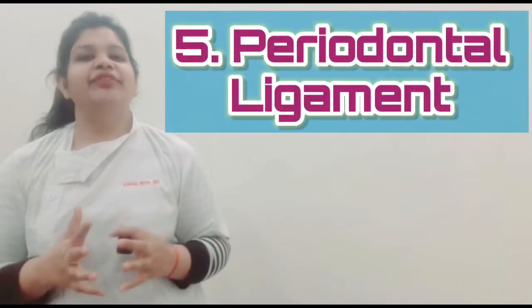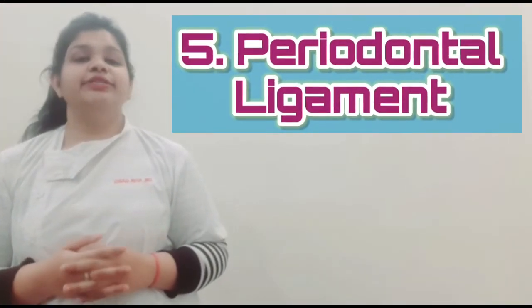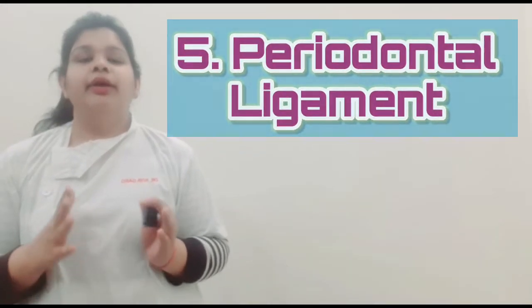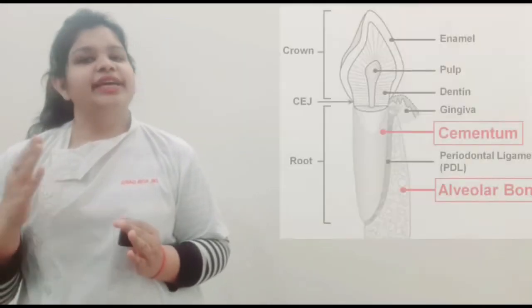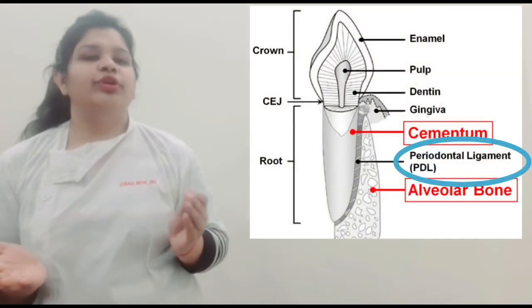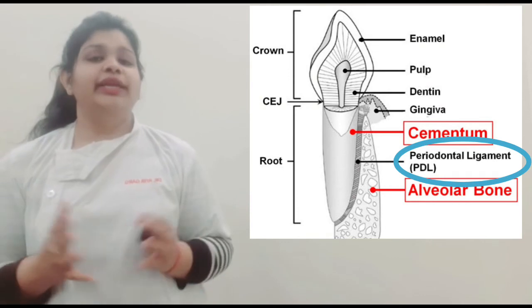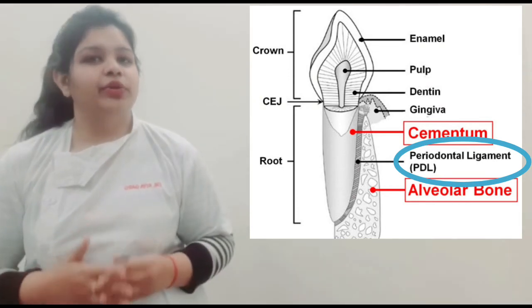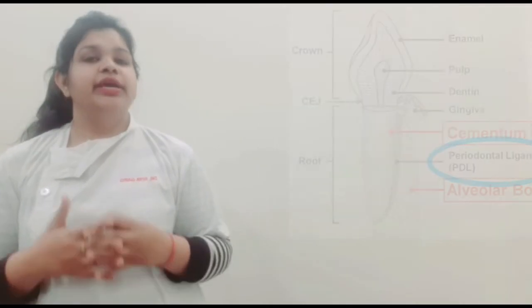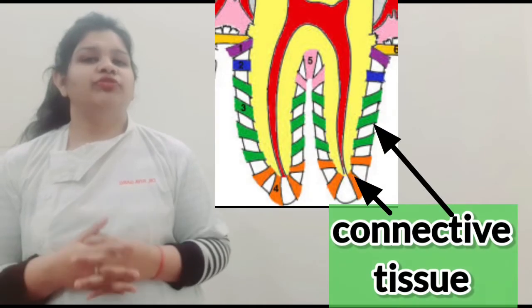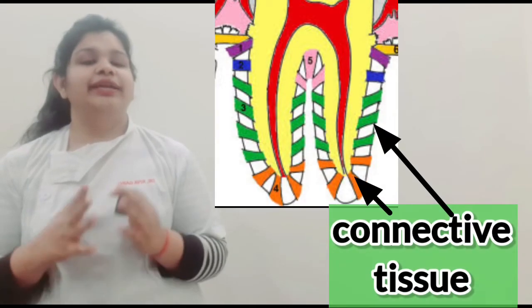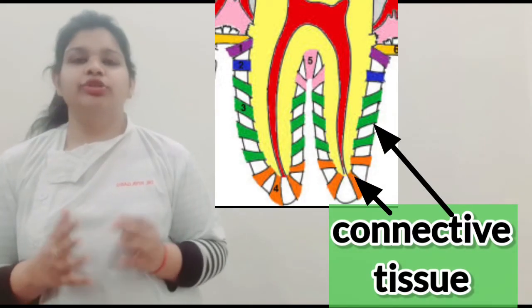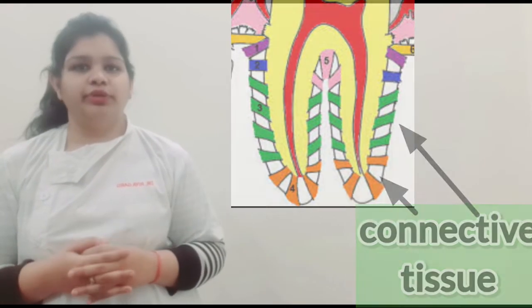The last and final layer is the periodontal ligament. It has cementum on one side and the alveolar bone on the other side. It is a layer between the cementum and alveolar bone. There are connective tissue fibers that help in holding the tooth to the jawbone. So these are the different layers of teeth.